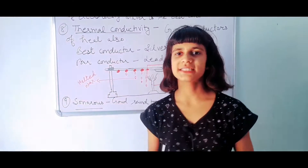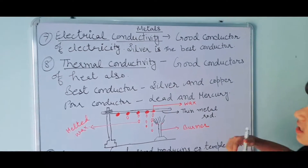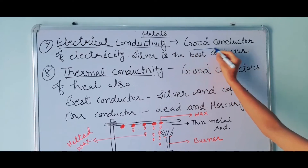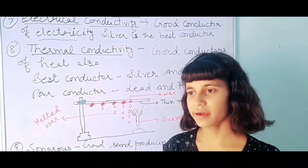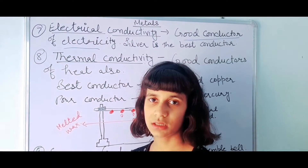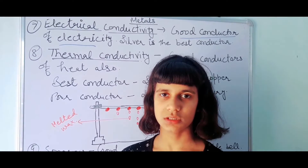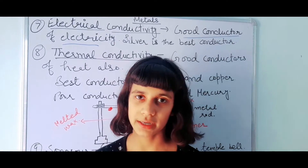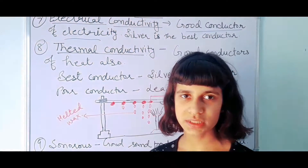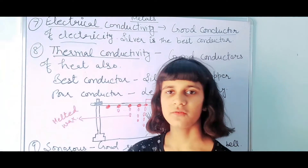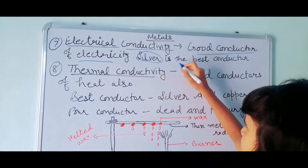Our next property is electrical conductivity. Electrical conductivity means that a material which is a good conductor of electricity conducts electricity because it has free electrons. Silver is the best conductor of electricity because it conducts electricity in just a few seconds.